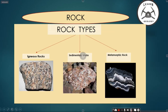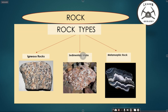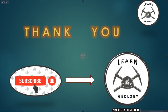So how many types of rock are on our surface? Scientists and geologists have divided rock into three major groups. One is igneous rock, the second is sedimentary rock, and the third is metamorphic rock. We will discuss these three in detail in separate lectures, one by one. Hope you will learn a lot from this lecture.